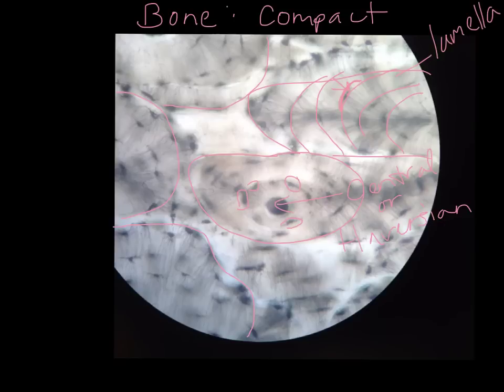However, though they are connected to their nutrition source — the Haversian canal — via these little stripes called canaliculi. So these osteocytes, to me, almost look like big spiders with lots of legs, extending through the rings of lamellae to the next layer and the next layer on into the central canal.